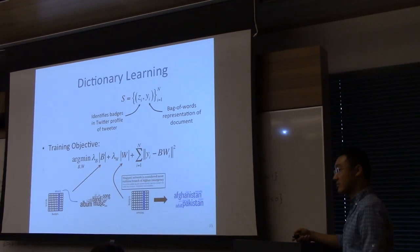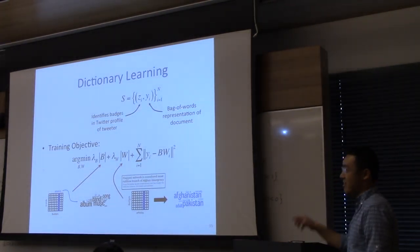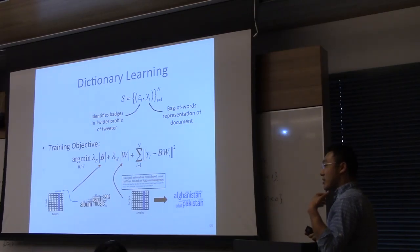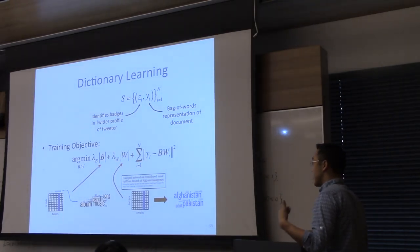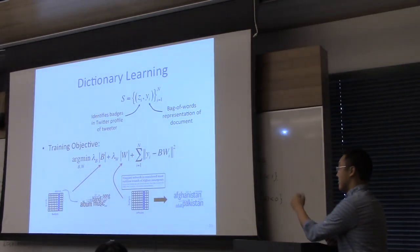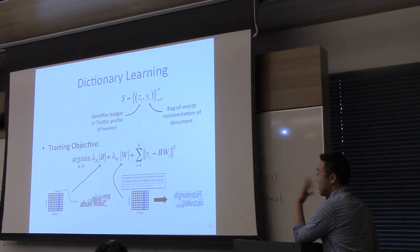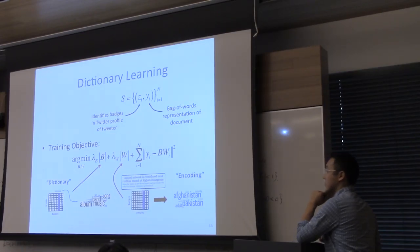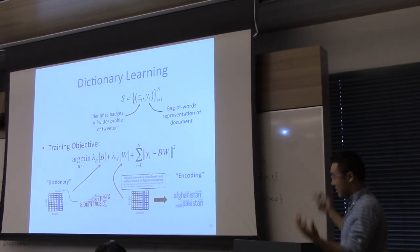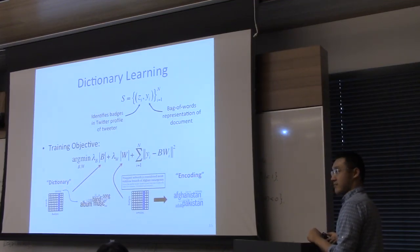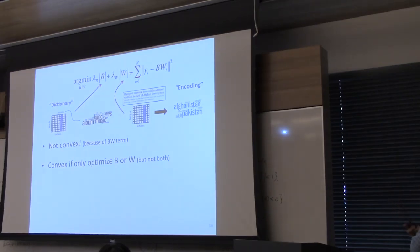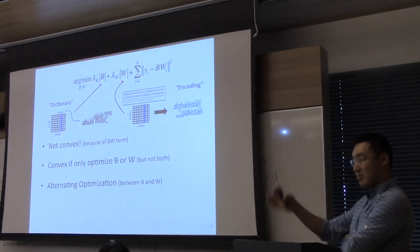This is the same as latent factor modeling from the homework, except instead of just having random initialization factors and training the best latent factors using essentially unsupervised learning, we have some way of constraining what each latent factor can be by using badges. This is not a convex optimization problem — it's convex only if we optimize one of B or W but not both. So we do alternating optimization, something you've already seen in the homework.